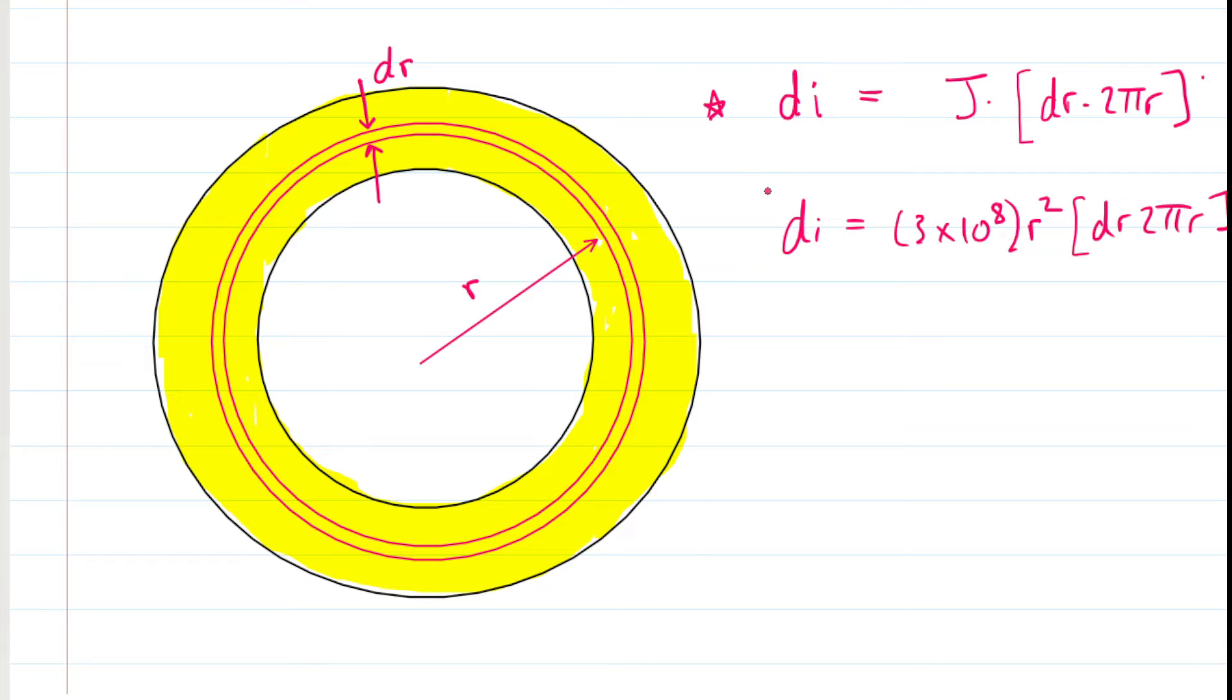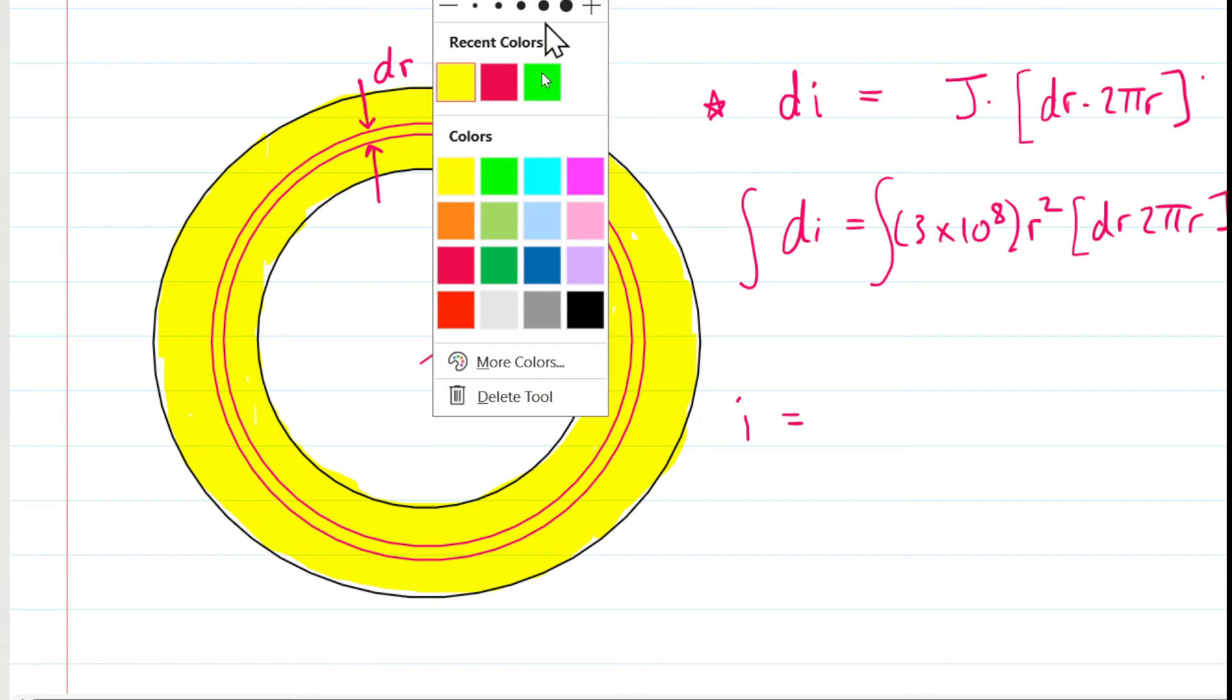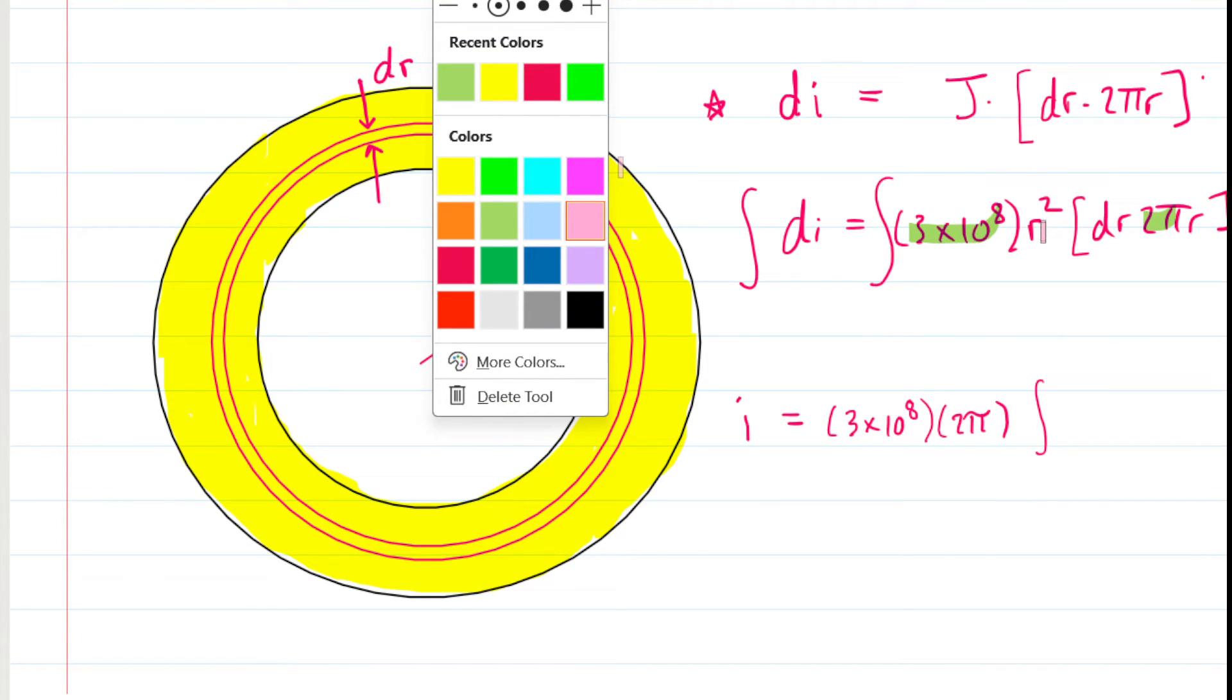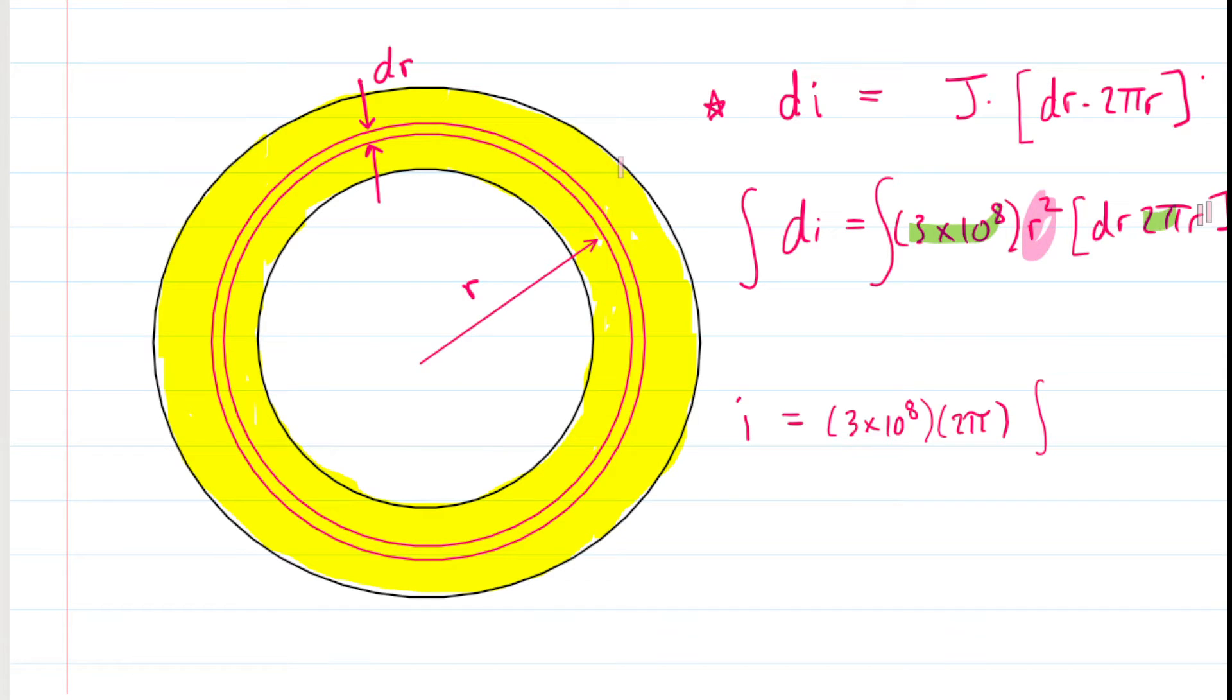But we can use calculus to add an infinite number of currents that are flowing through those infinite teeny-tiny rings. So, what we do is we integrate. We integrate the left-hand side of this equation and the right-hand side of this equation. Basically, what integration does is it sums all of the currents that are encapsulated by an infinite number of teeny-tiny-thin rings. So, when we integrate the left-hand side, we end up with current I. And, on the right-hand side, it's a bit of a mess, but we can perhaps factor out some constants. We have 3 times 10 to the 8th, and then we have 2π. So, we're going to factor those out.